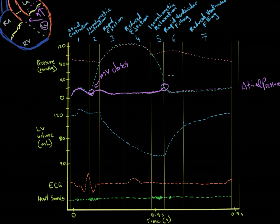The left atrium fills and fills until the pressure in the left atrium overtakes the pressure in the left ventricle. At that point the mitral valve gets pushed open, allowing blood to be dumped into the left ventricle again. Because blood can now flow through, the pressure in the left atrium goes back down as it empties.